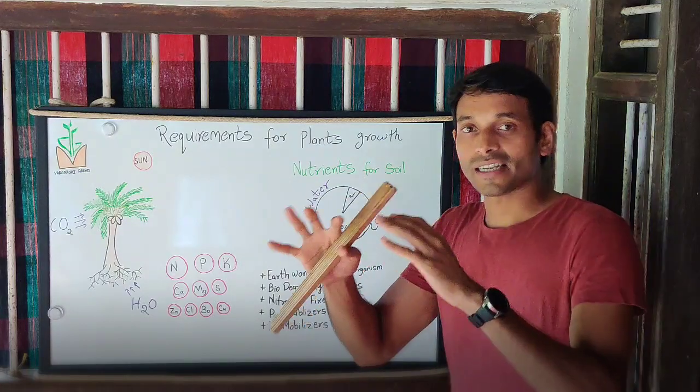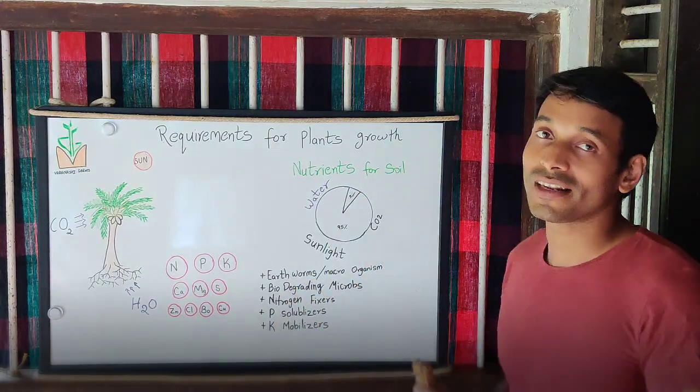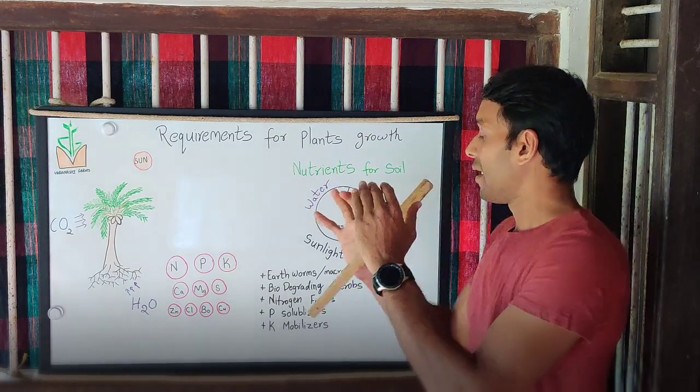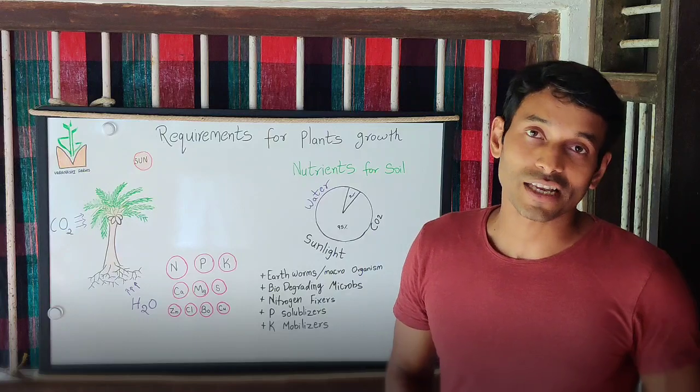Now the organic matter present in the soil is biodegraded using micro earthworms and microorganisms. You also have nitrogen fixers, phosphorus solubilizers and potassium mobilizers in the soil.